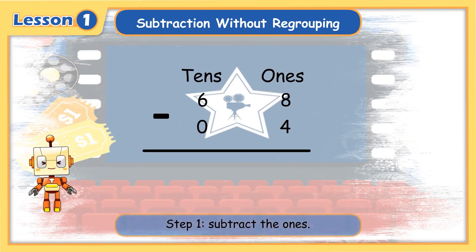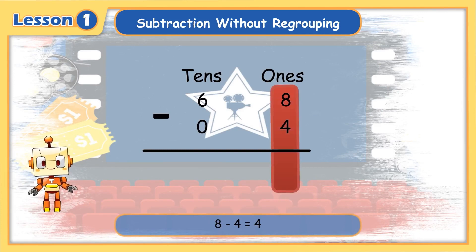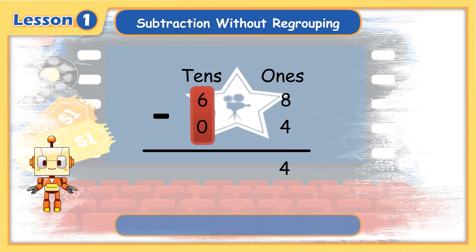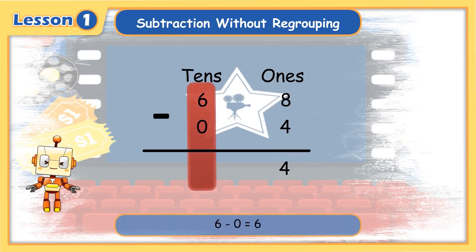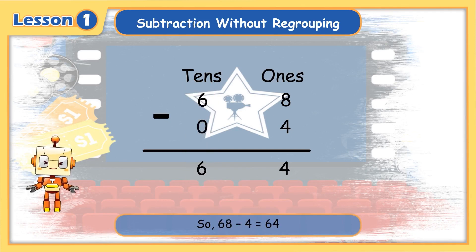Step 1: subtract the ones. 8 minus 4 equals 4. Step 2: subtract the tens. 6 minus 0 equals 6. So, 68 minus 4 equals 64.